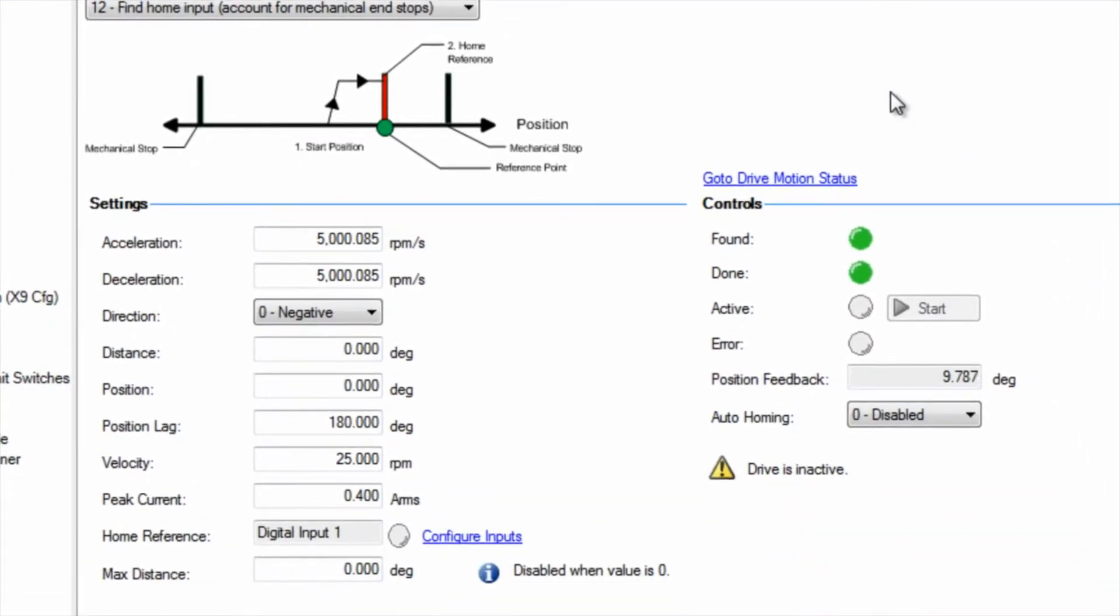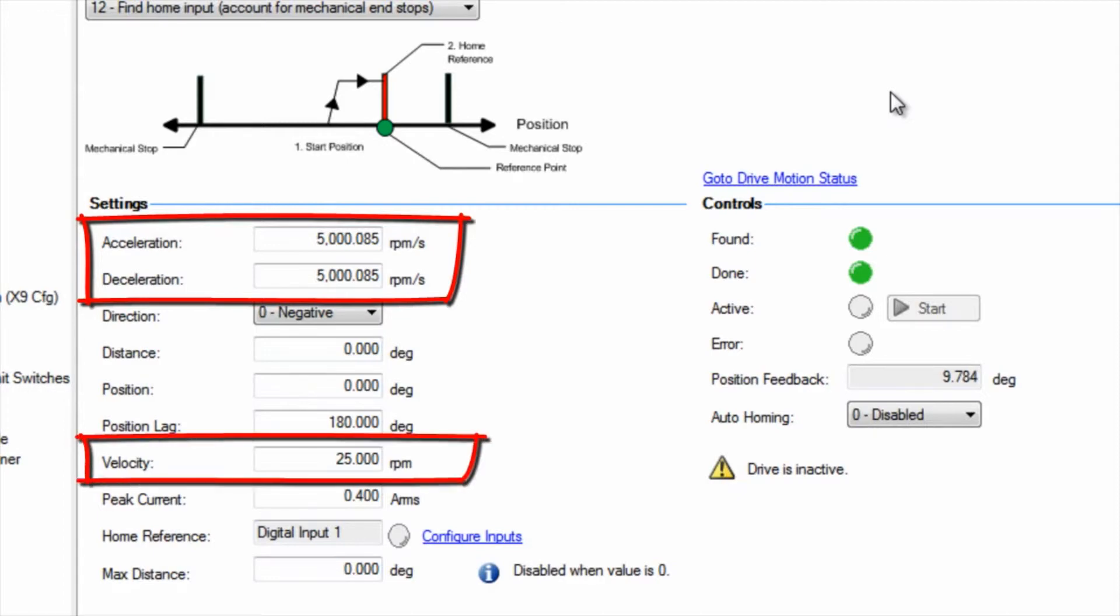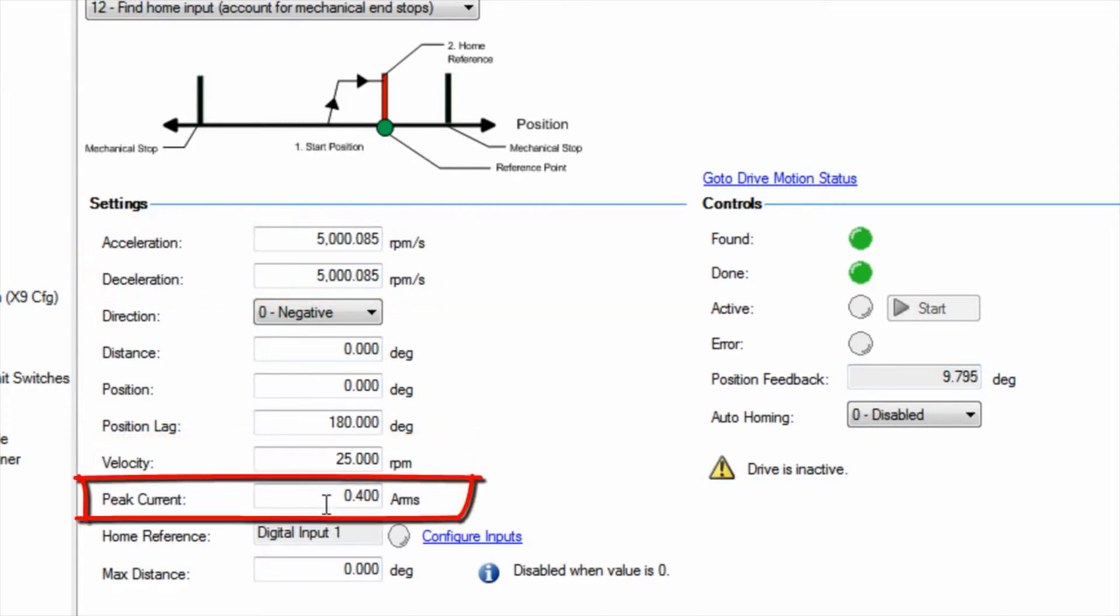As with homing to a hard stop, the acceleration, deceleration, velocity and peak current must be set to prevent damage during homing.